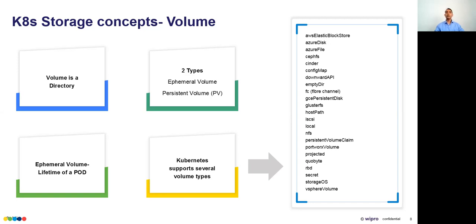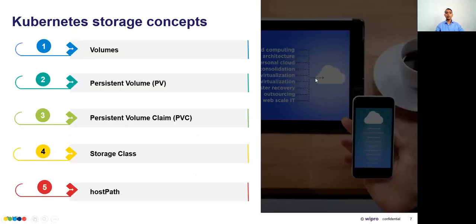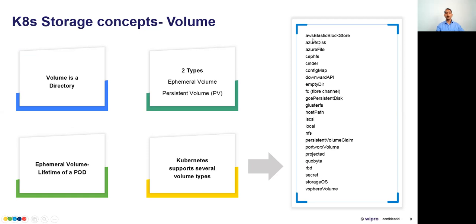Kubernetes supports many volume types. Looking at a quick list, it supports AWS EBS, Azure Disk, Azure File, EmptyDir, and others. Some like EmptyDir and HostPath are built-in, while others like Azure Disk require an Azure subscription and cloud access.